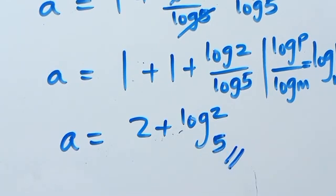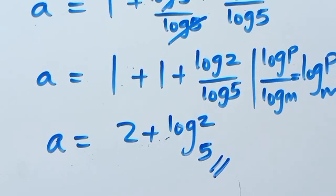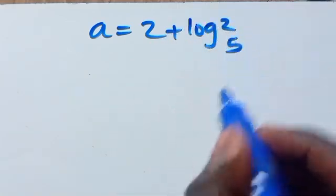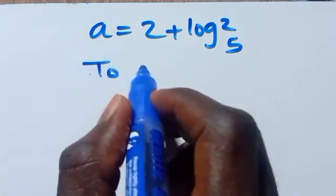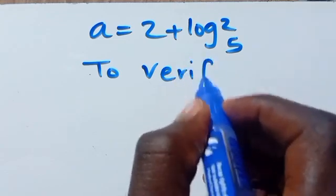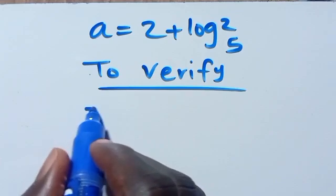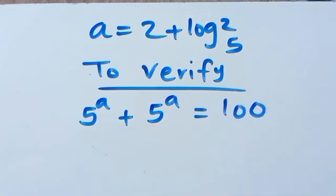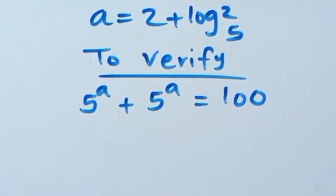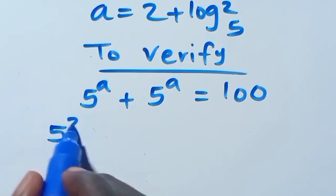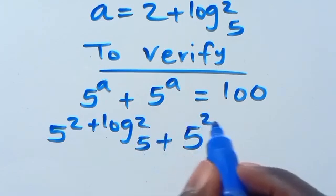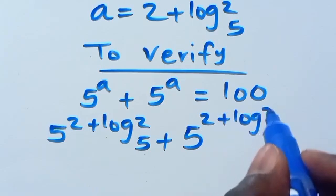This is the value of a in simplest form: a equals 2 plus log base 5 of 2. Now let us verify this answer. We have 5 to the power of a plus 5 to the power of a equals 100, so when a equals this value we have 5 to the power of (2 plus log base 5 of 2) plus 5 to the power of (2 plus log base 5 of 2).